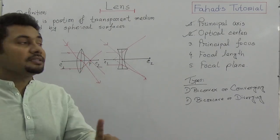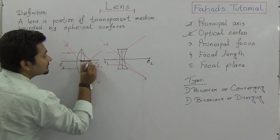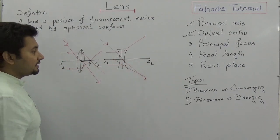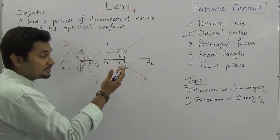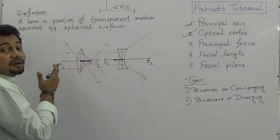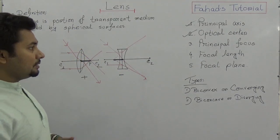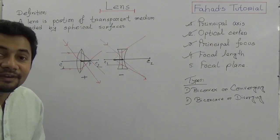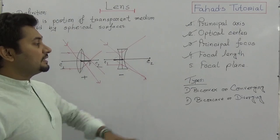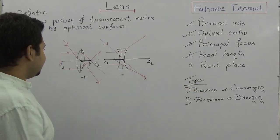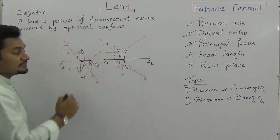The distance from the optical center to the principal focus is the focal length. In the case of concave lens, this length is considered in the reverse axis. That is why when we think about sign convention, we must know that in case of biconvex lens it is positive, and in case of concave lens it is negative. An imaginary line perpendicular to the principal axis at the principal focus — that plane is known as the focal plane.